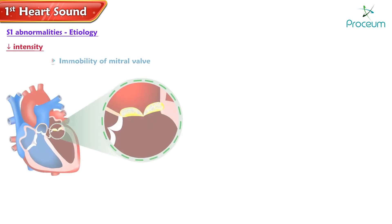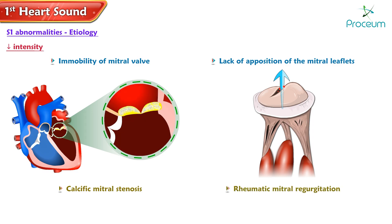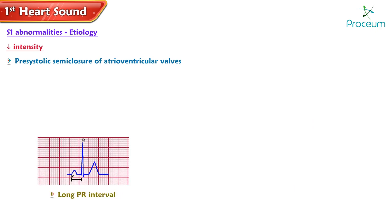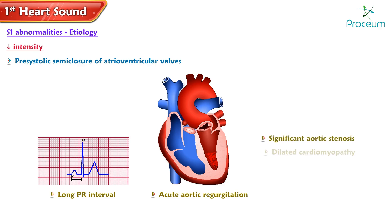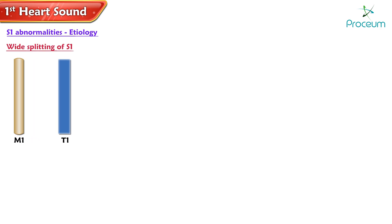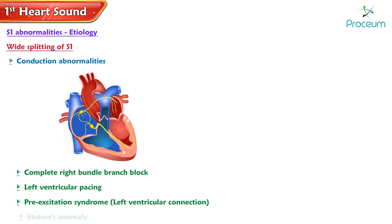Abnormalities causing a decreased intensity of S1 include immobility of the mitral valve from calcific mitral stenosis, lack of apposition of the mitral leaflets in rheumatic mitral regurgitation, pre-systolic semi-closure of the atrioventricular valves from a long PR interval, acute aortic regurgitation, significant aortic stenosis, dilated cardiomyopathy, and left bundle branch block. Wide splitting of S1 can indicate conduction abnormalities such as complete right bundle branch block, left ventricular pacing, pre-excitation syndrome, left ventricular connection, and Ebstein's anomaly.